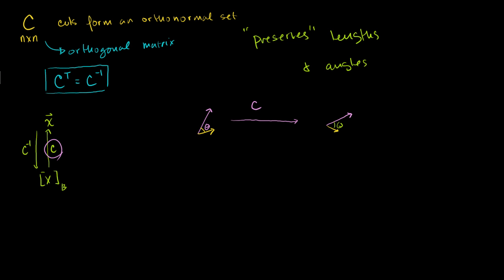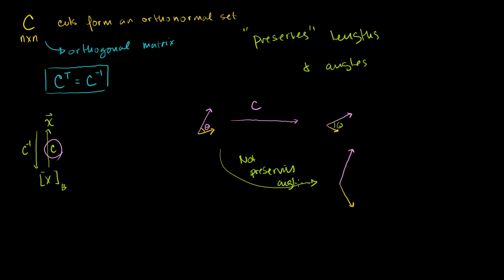If we didn't have this property, we could imagine a transformation that doesn't preserve angles. For example, this vector could get a lot longer, and another vector could also get longer and distorted, so the angle also changes. That transformation is not preserving angles. So when you have a transformation matrix that's orthogonal, all it's essentially doing to your vectors is rotating them around — no distortion of vectors.